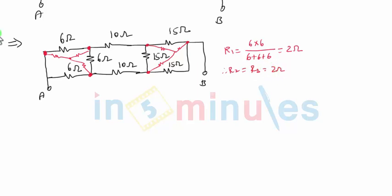Similarly let me now calculate R1 for another network. This is my another delta which I am converting. This time it will be 15 into 15 divided by. This will be equal to 5 ohms.